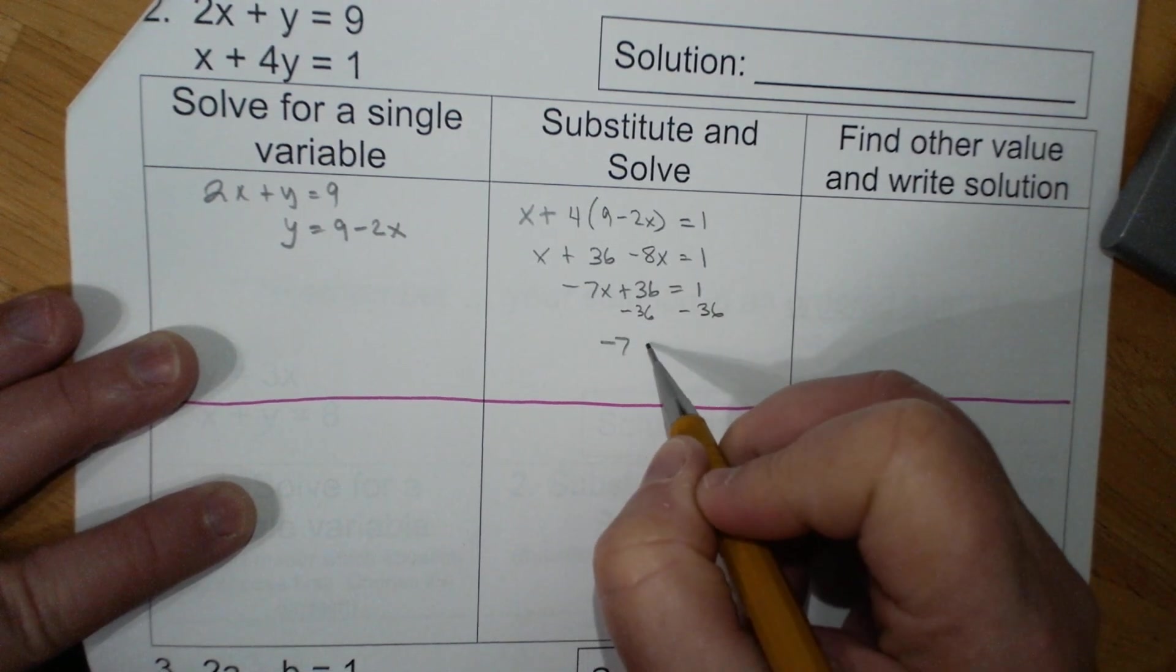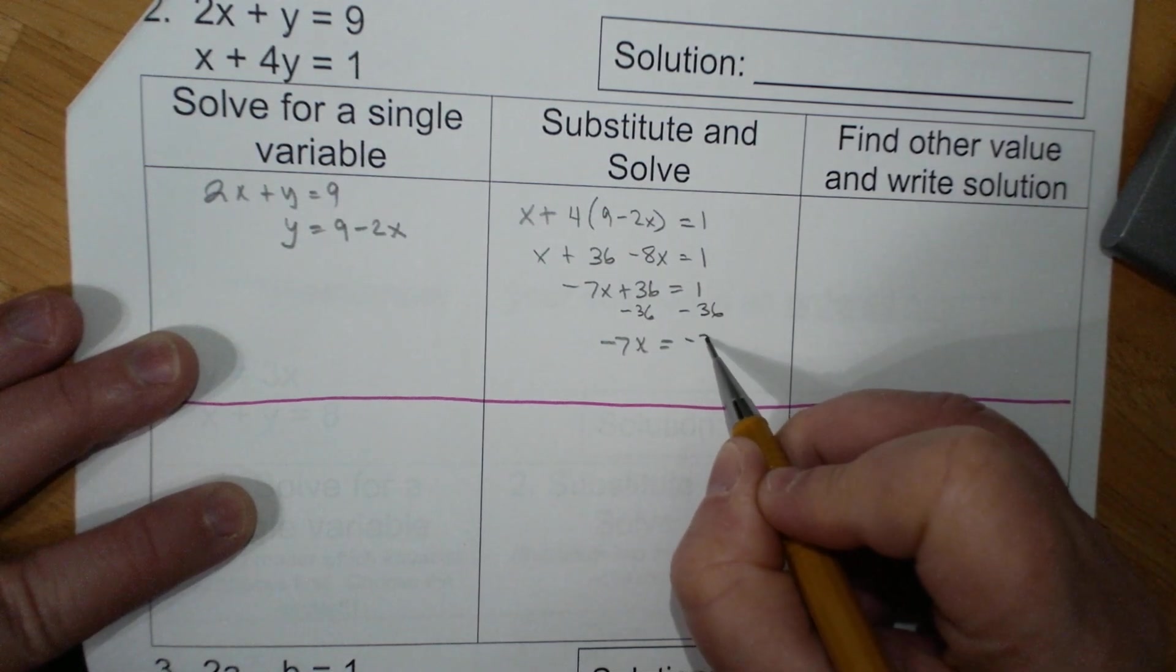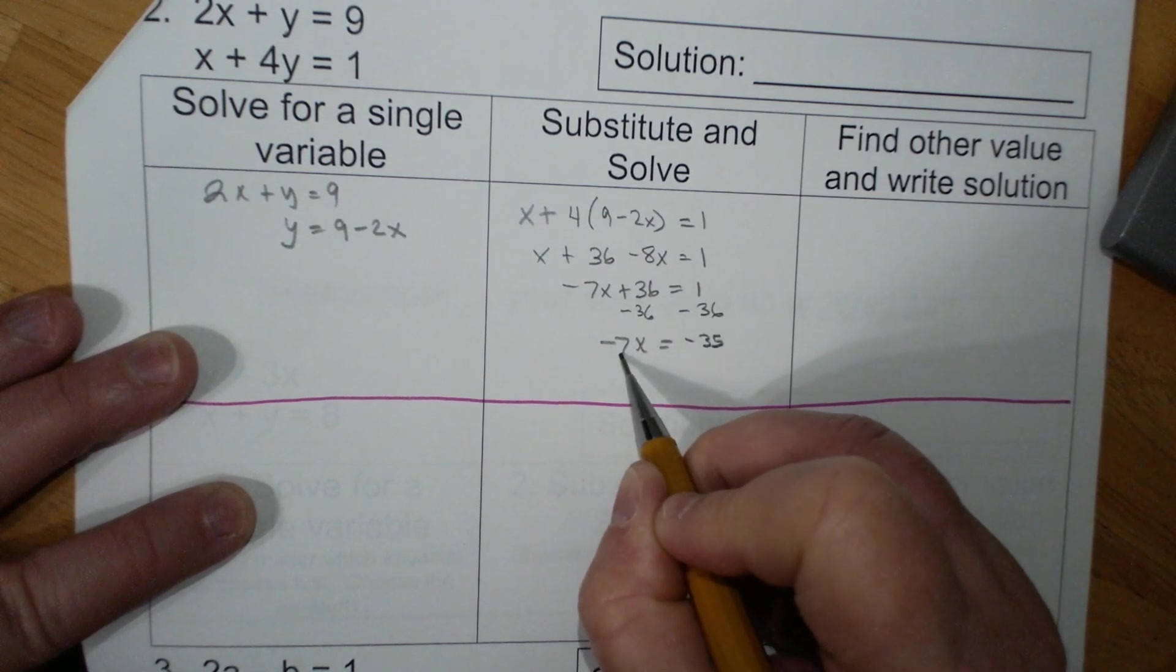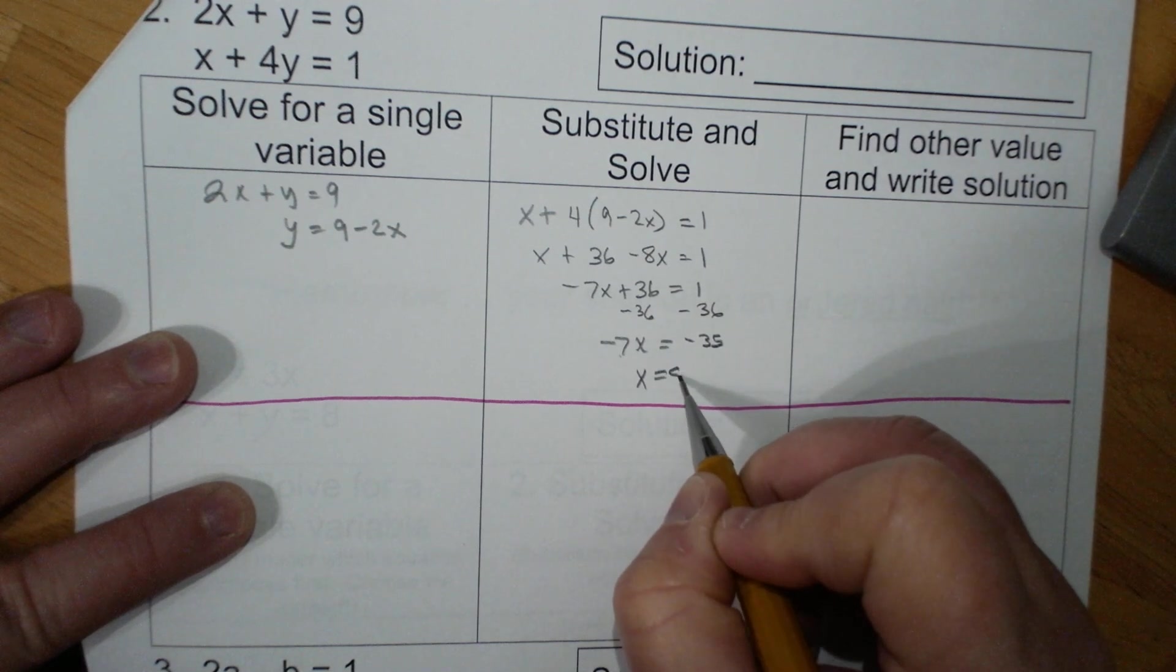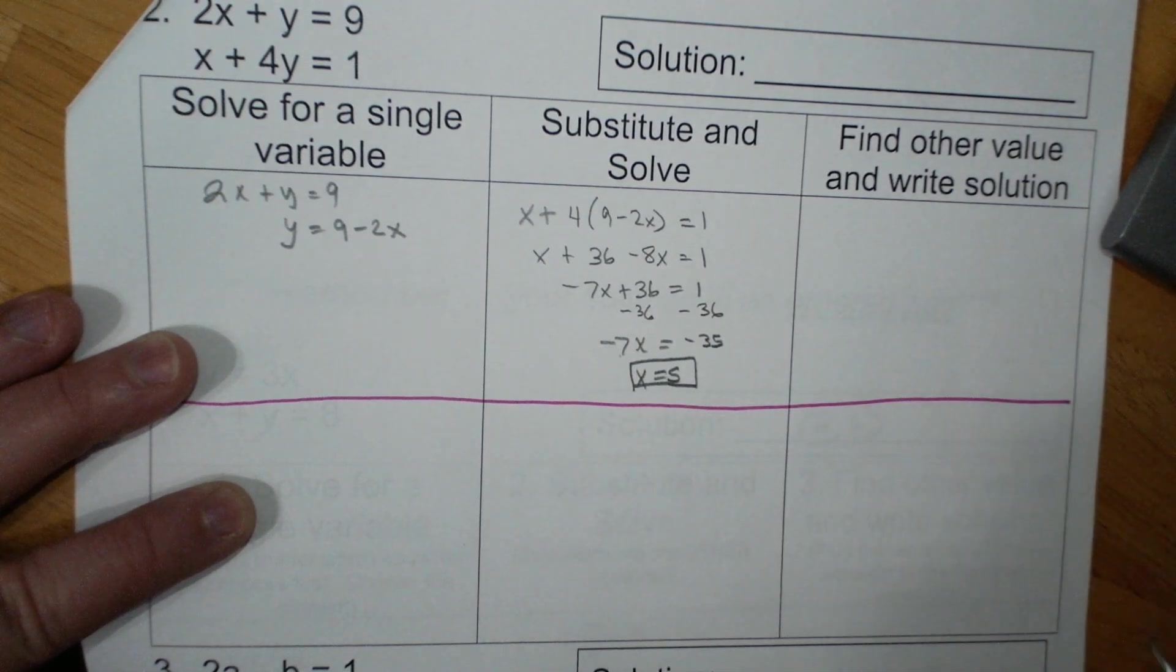Negative 7x equals negative 35. Divide by negative 7, x equals 5. There's one coordinate.